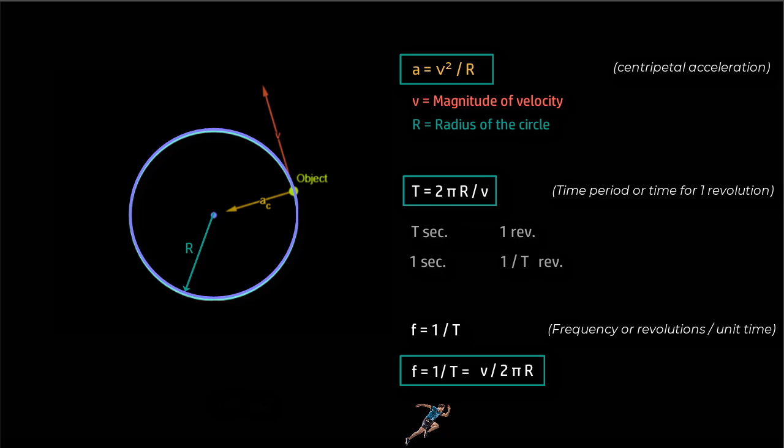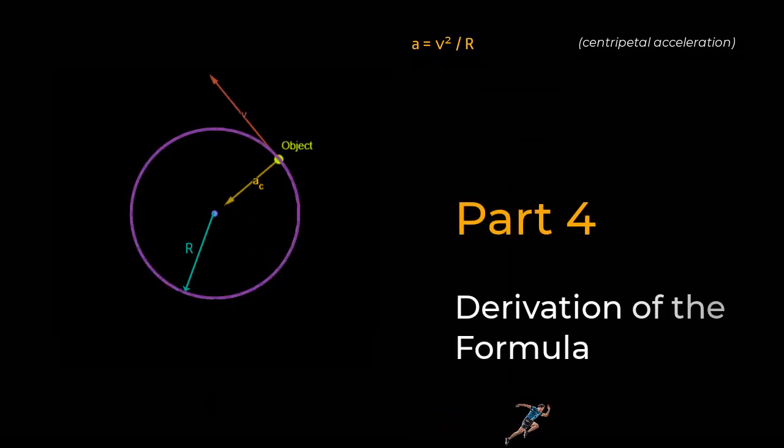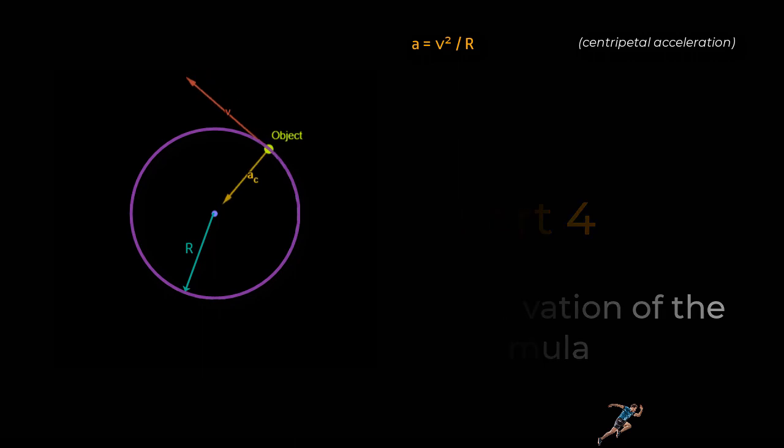So let us now see how this formula can be derived. And when you do this derivation, your understanding of circular motion will get even better. And this will really help you to solve problems that may not be as straightforward. So look at this particle which is moving in uniform circular motion with a certain constant speed in a radius r.